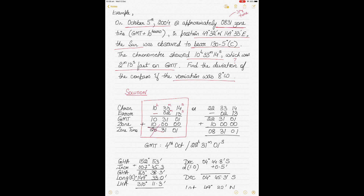So 10:33:14 on the chronometer could also mean 22:33:14. If we do the same thing — subtract the error — the GMT time we get is 22:31:01. Then, because the ship is 10 hours ahead of GMT since it's on east longitude, we add 10 hours, and the ship's time becomes 08:31:01. We know it's the 5th of October on the ship at 08:31, which matches the hint given in the question, so we use this as our correct case.